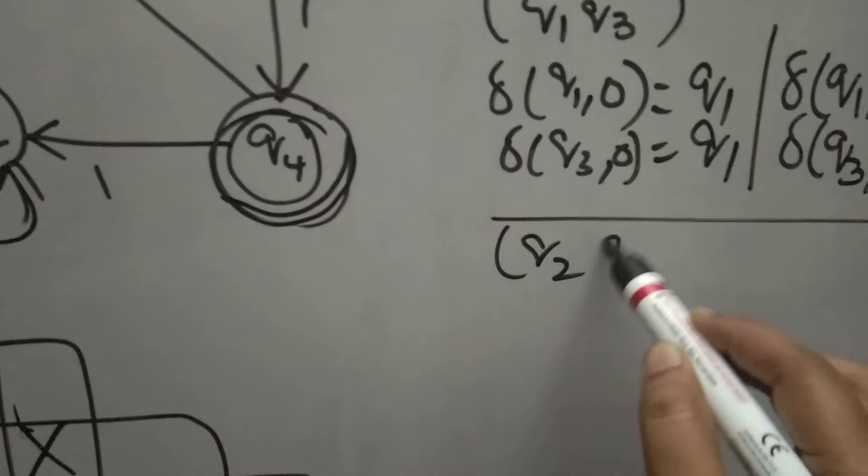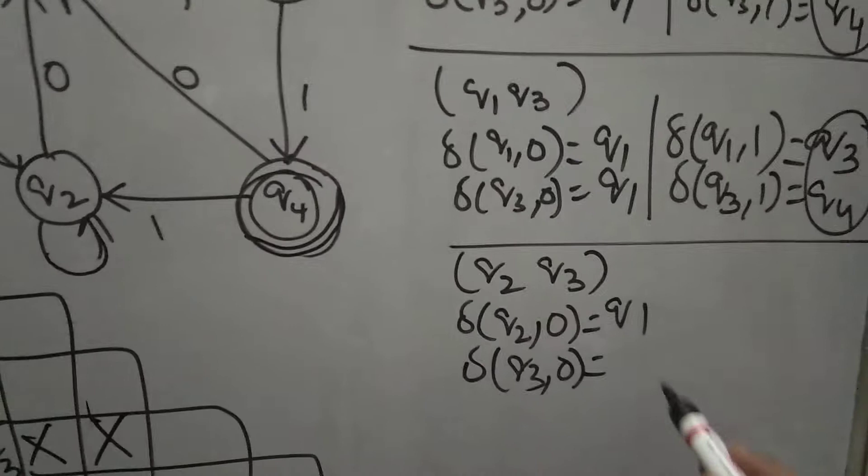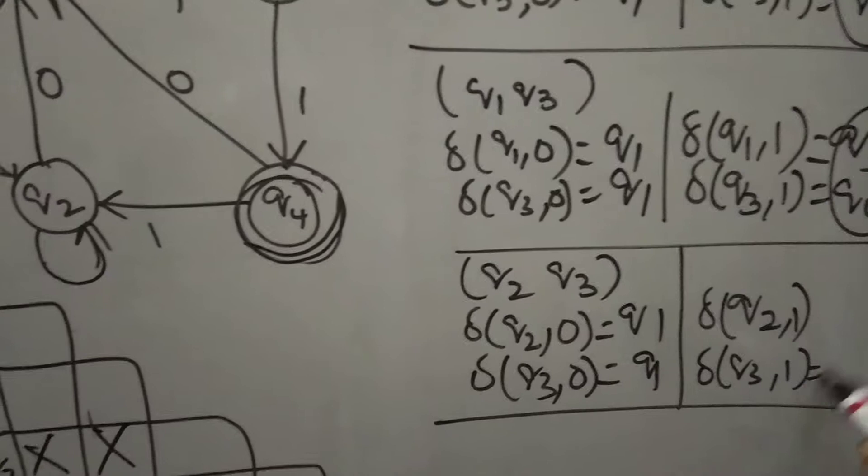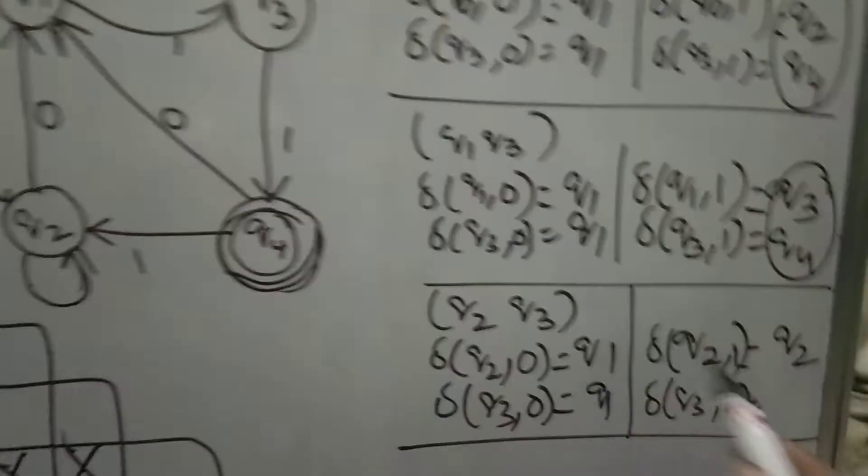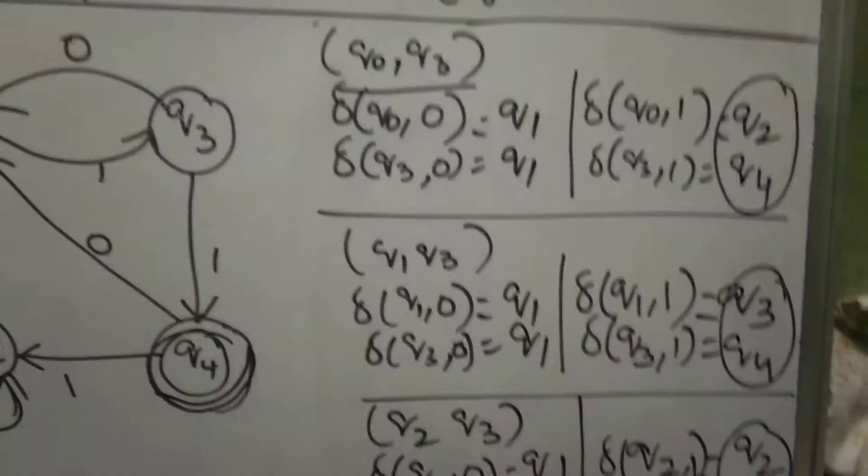Next, go for Q2, Q3. What is Q2 upon 0? Q1. What is Q3 upon 0? Q1. Again Q1, Q1 we cannot mark. Go for one more. Q2 upon 1, Q3 upon 1. Q2 upon 1 is Q2. Q3 upon 1 is Q4. Again check whether Q2, Q4 marked or not. Q2, Q4 is marked, so Q2, Q3 also mark it.